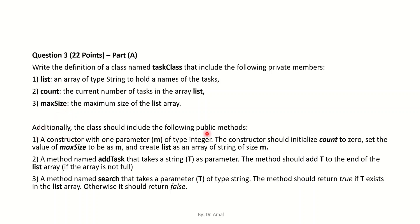Additionally, you should have the following public methods. First, a constructor with one parameter m of type integer. The constructor should initialize count to zero, set the value of maxSize to m, and create list as an array of size m. Basically, in the constructor we need to initialize the private members.